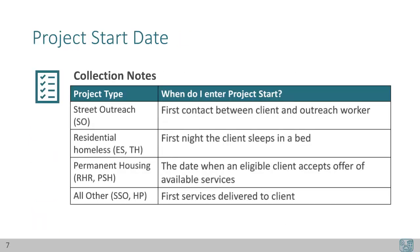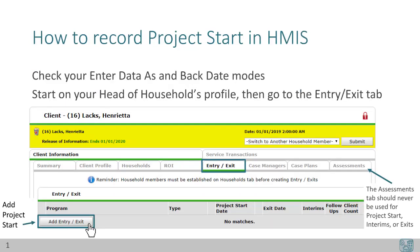Remember, too, that project start date is different for different project types. This is the date that is used for back date mode from the very beginning. Check your enter data as and back date modes. Start on your head of household's profile, then go to the entry exit tab. You may see another tab called assessments — never use this for project start, interims, or exits. Stick to the entry exit tab. Then click on the add entry exit button. This button will only be used to record project starts.